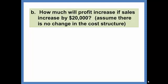How much will profit increase if sales increase by $20,000? Assume there is no change in the cost structure. So that means fixed costs will remain at $72,000 and the contribution margin ratio will be 30%.